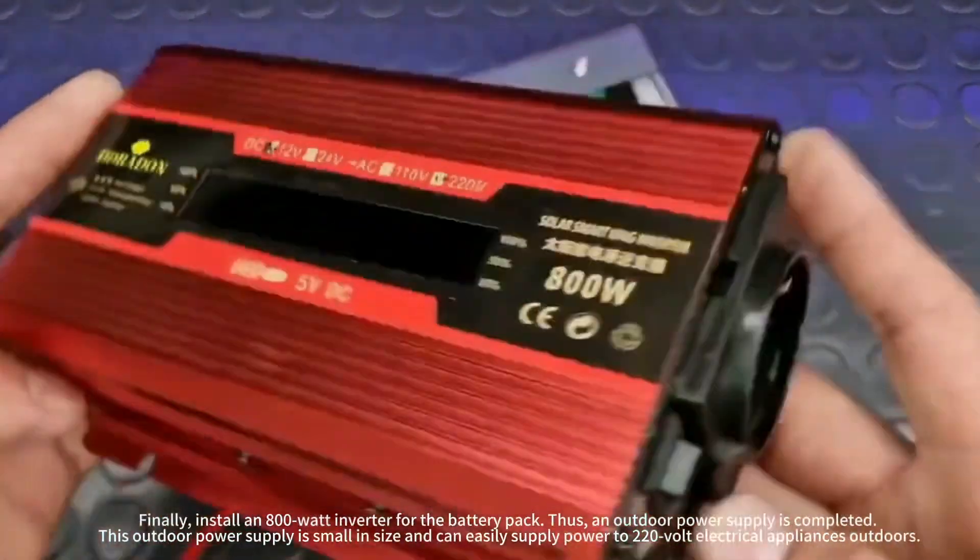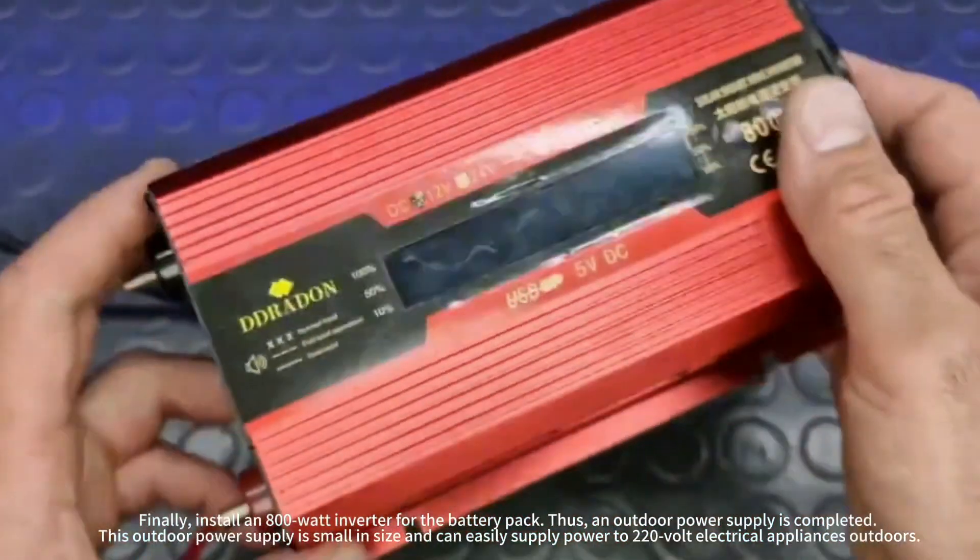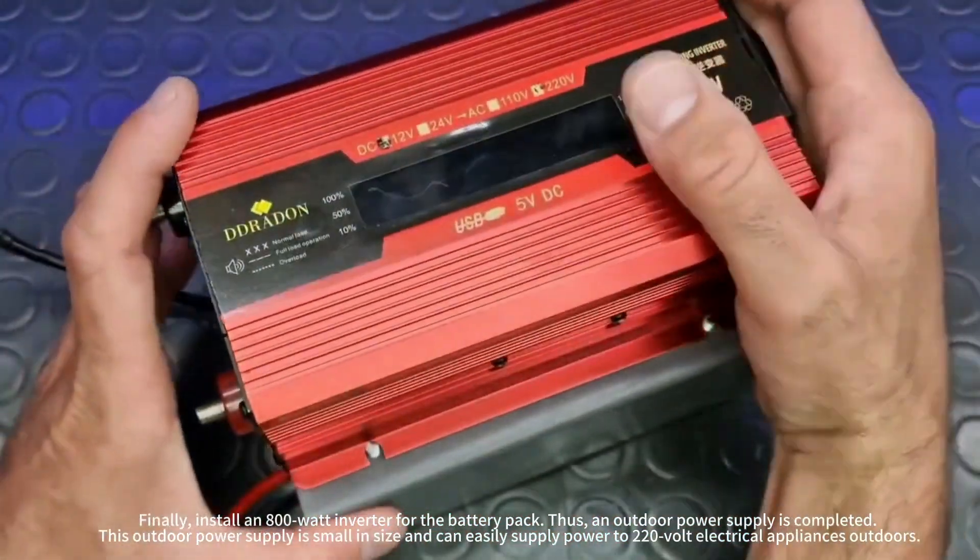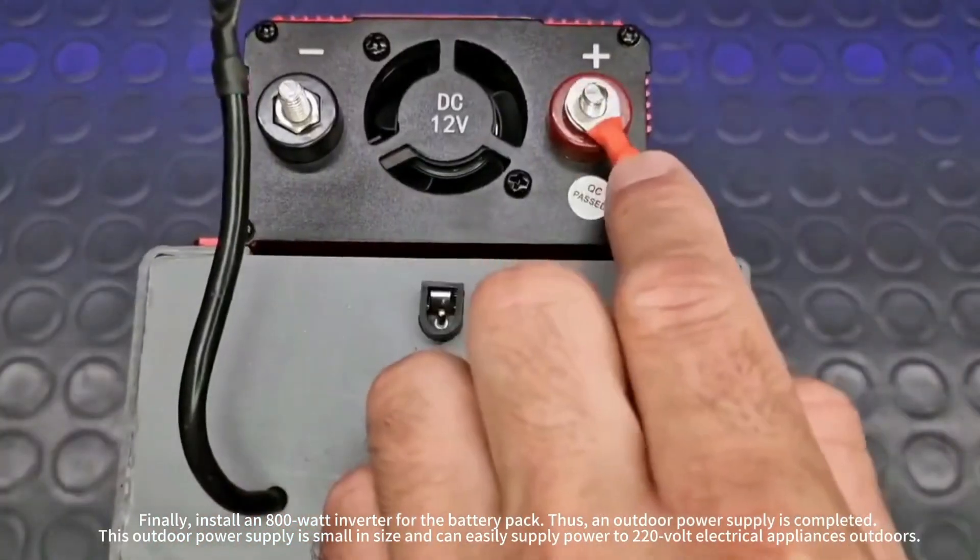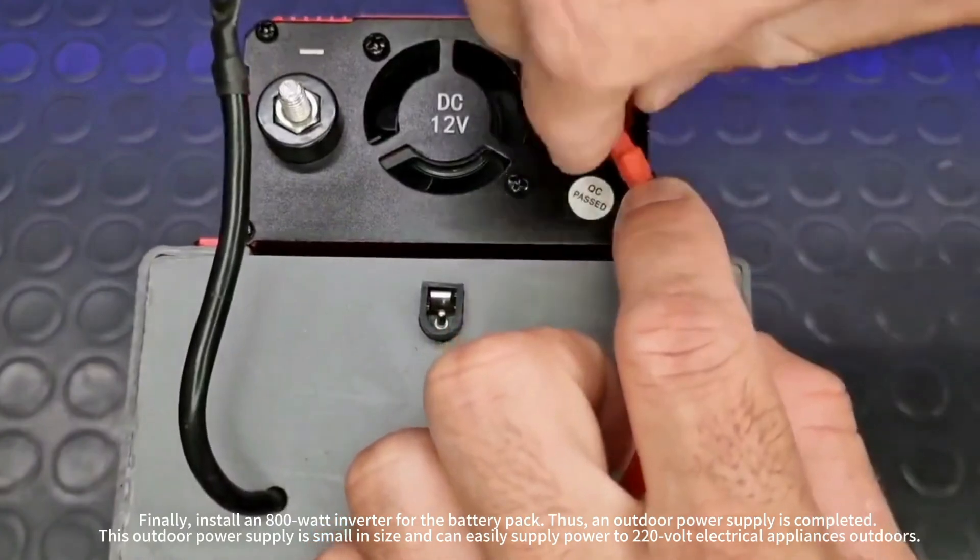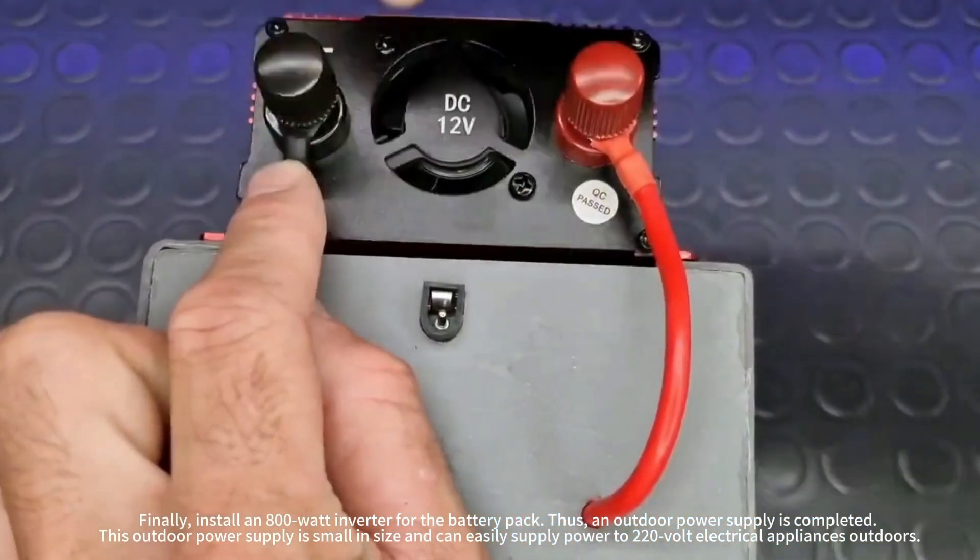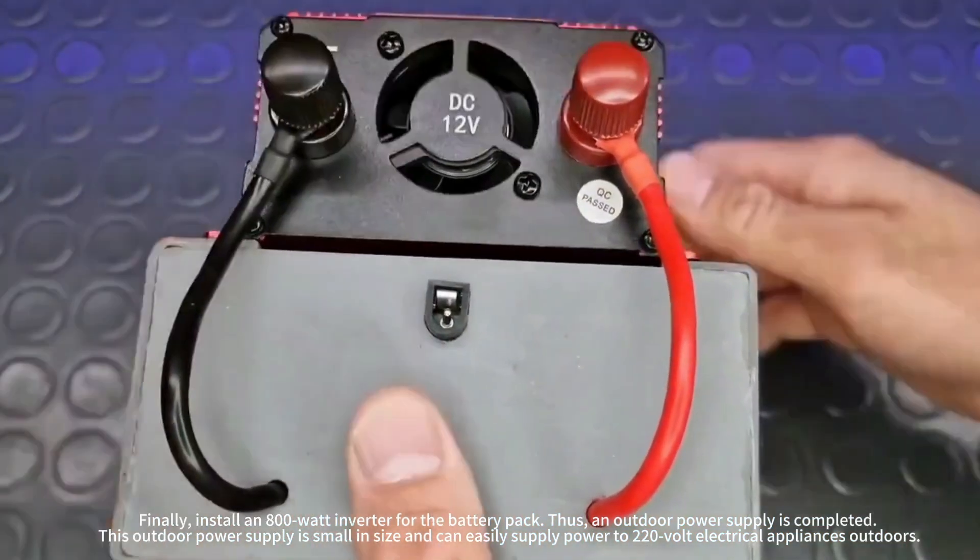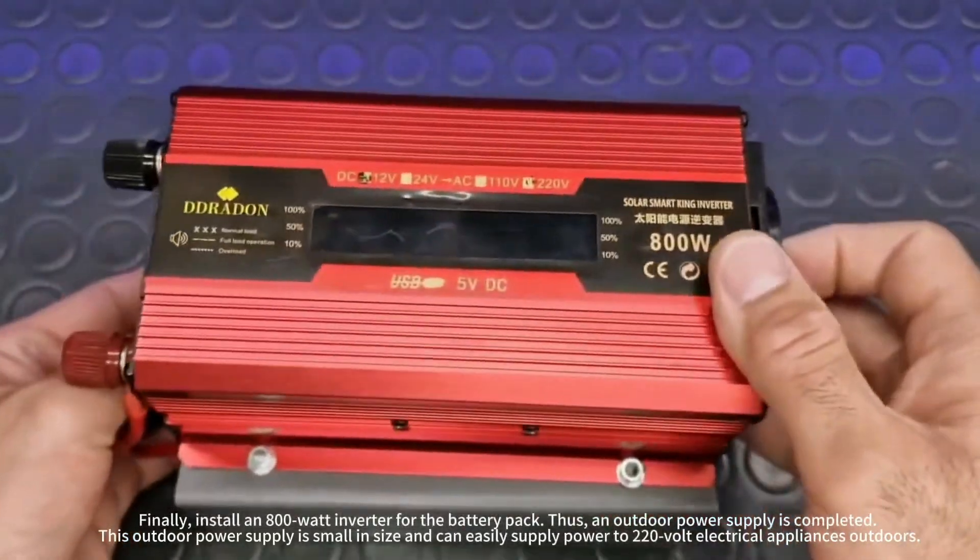Finally, install an 800-watt inverter for the battery pack. Thus, an outdoor power supply is completed. This outdoor power supply is small in size and can easily supply power to 220-volt electrical appliances outdoors.